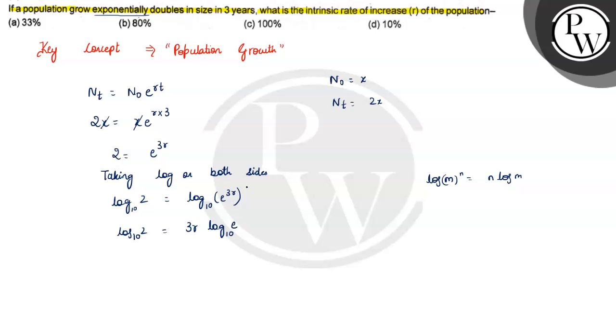We have to find r. So r is equal to log 2 to the base 10 divided by 3 log e to the base 10. What is log 2? Log 2 value is 0.301 divided by 3 into log e to the base 10, which is 0.434.